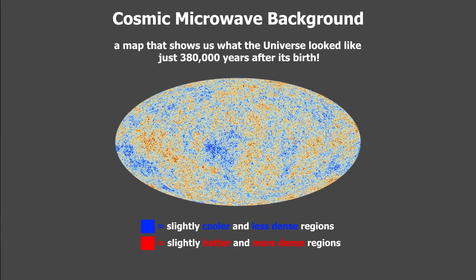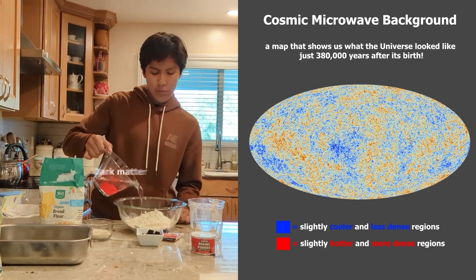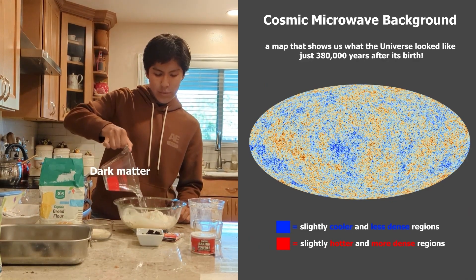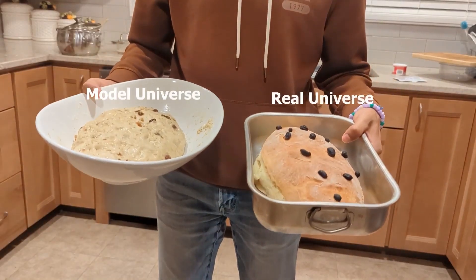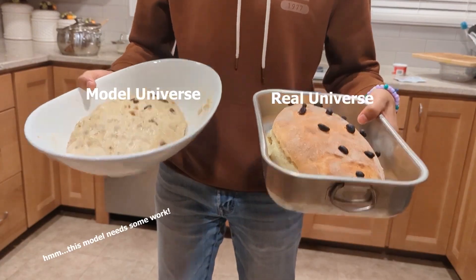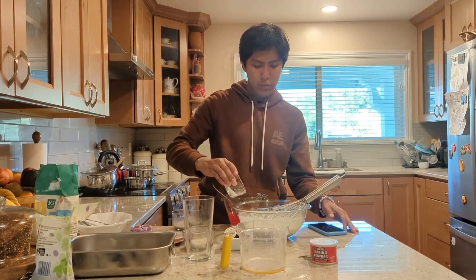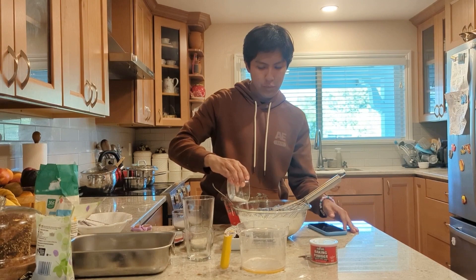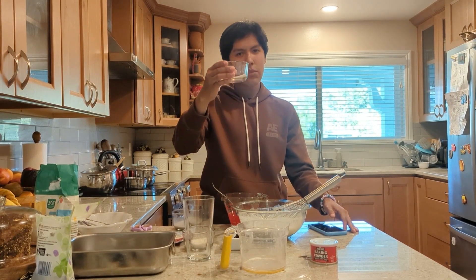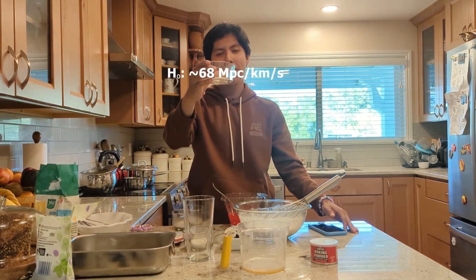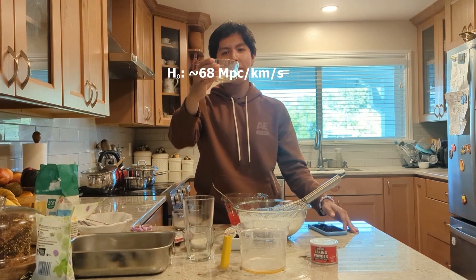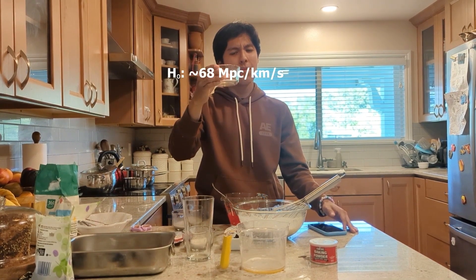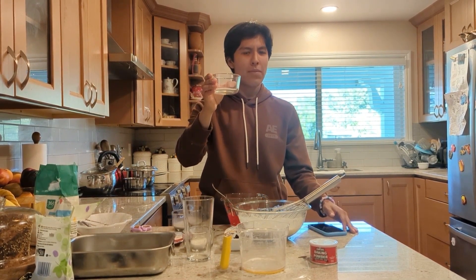The second method involves extrapolating from the beginning of the universe. If we know the state of the early universe, and we also know the ingredients that make up our universe, we can model how it evolves, and then compare those models to how the universe actually looks like today. Astronomers find that one key ingredient is always present when an identical model universe is produced: a Hubble constant of around 68 kilometers per second per megaparsec, a value significantly different from the previous value of 73.